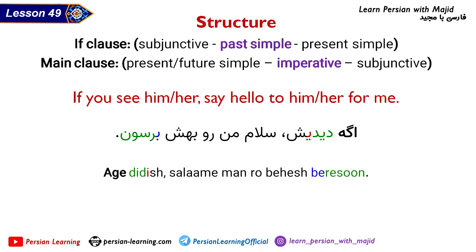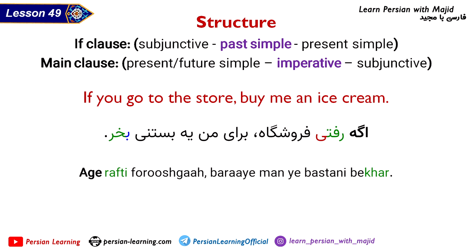اگه دیدیش — 'if you see him or her'. دیدن is the verb, past stem دید, دیدی is 'you', and ش is the object pronoun for him or her. سلام من رو بهش برسون — 'say hello to him or her for me'. برسوندن means to take or deliver — here it means to take my hello and deliver it to that person. اگه دیدیش سلام من رو بهش برسون. اگه رفتی فروشگاه — 'if you go to the store'.